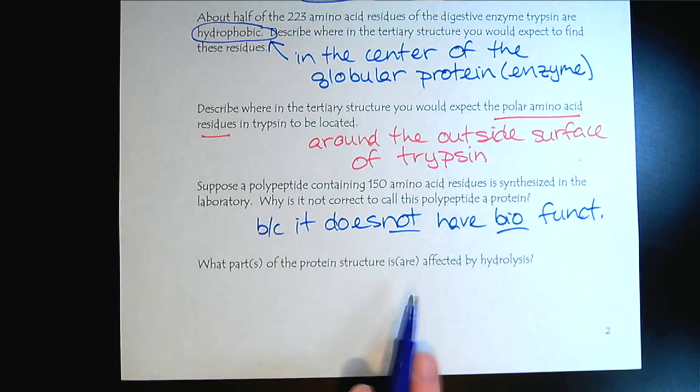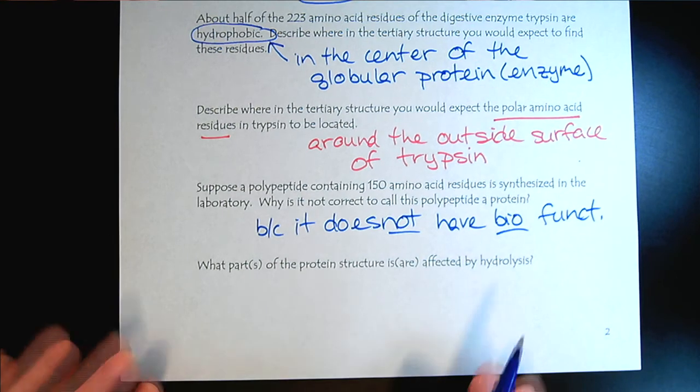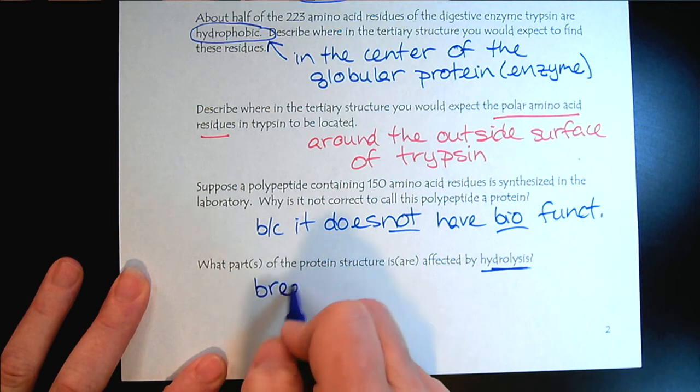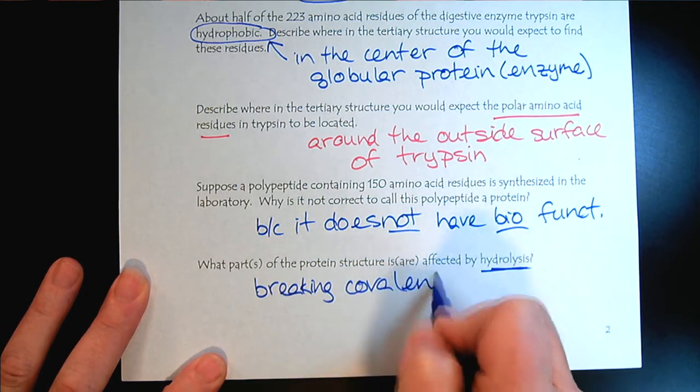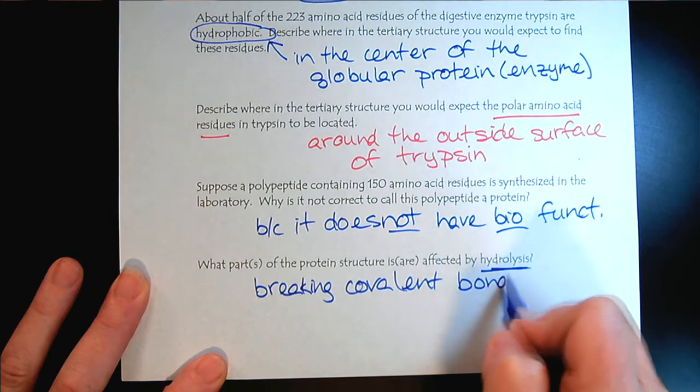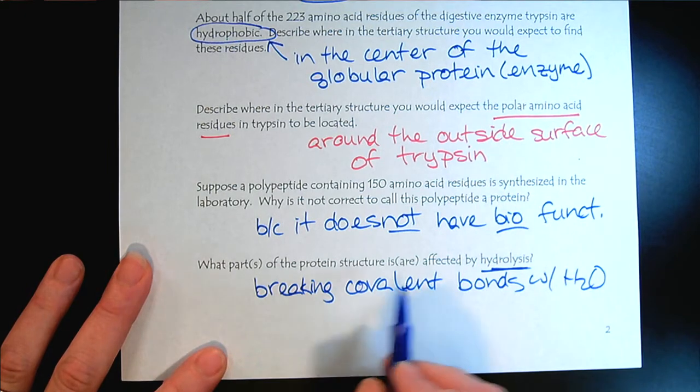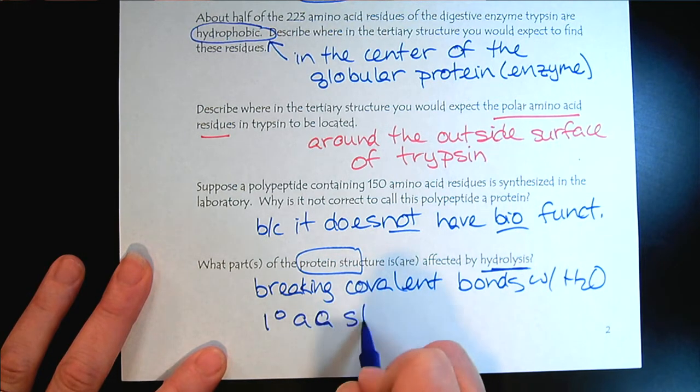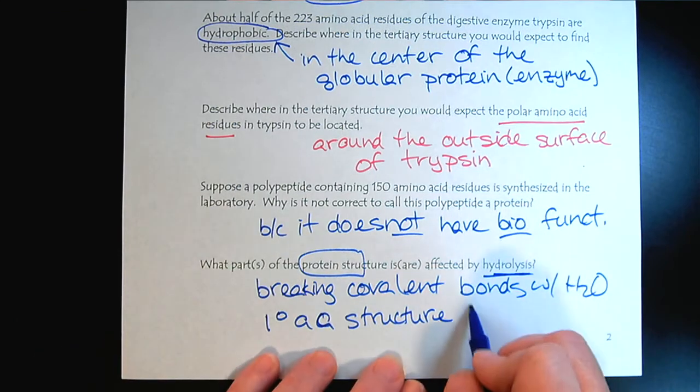What parts of the protein structure is or are affected by hydrolysis? In hydrolysis, that's breaking covalent bonds with water. So when we're talking about hydrolysis of proteins, we're talking about the primary amino acid structure being broken.